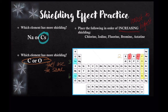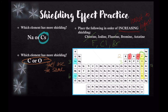Fluorine is in the lowest numbered period, so because it only has two energy levels, it has the smallest shield. Going in increasing order: fluorine first, followed by chlorine, then bromine, then iodine. Fluorine has two energy levels, chlorine has three, bromine has four, iodine has five, and finally astatine has a total of six energy levels.